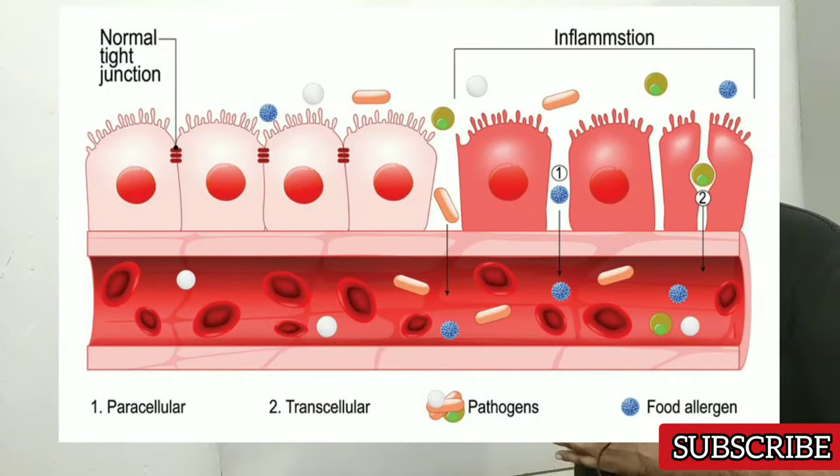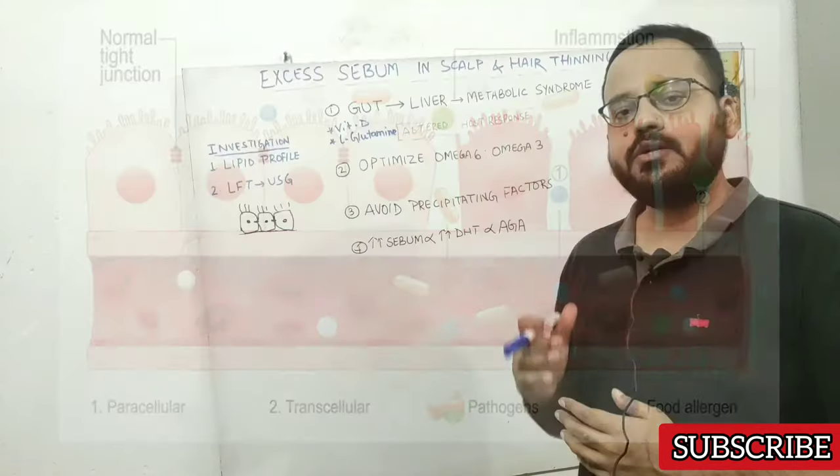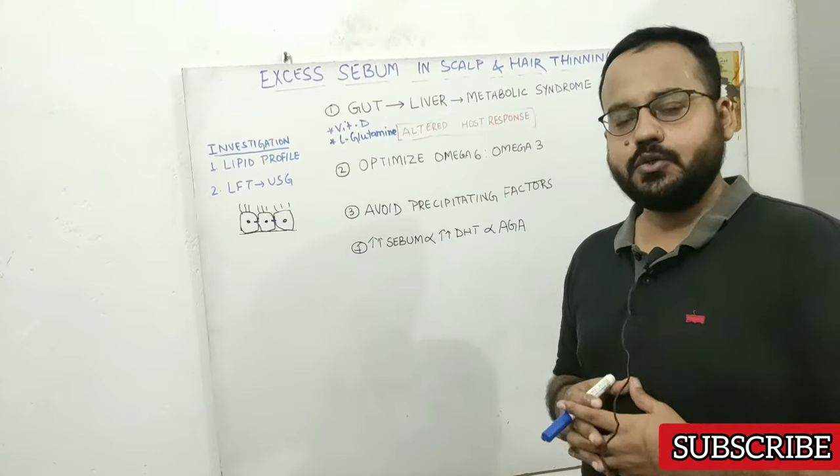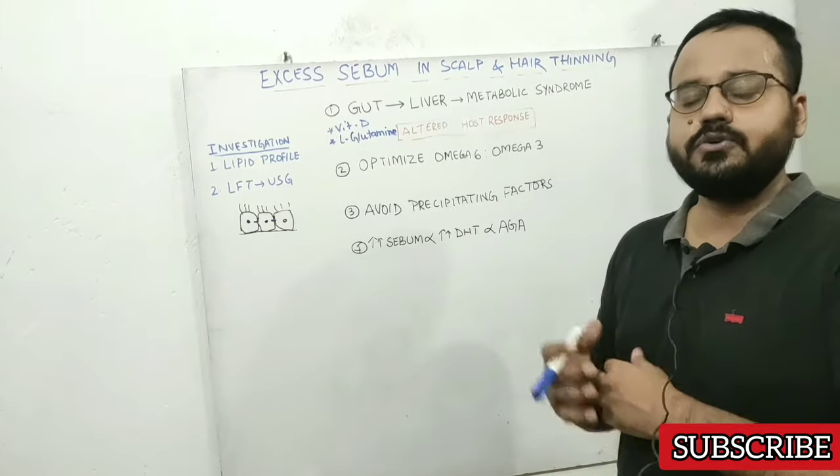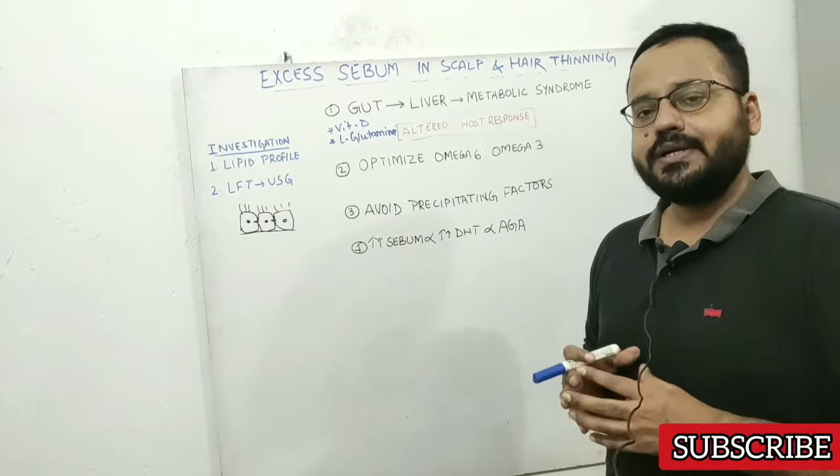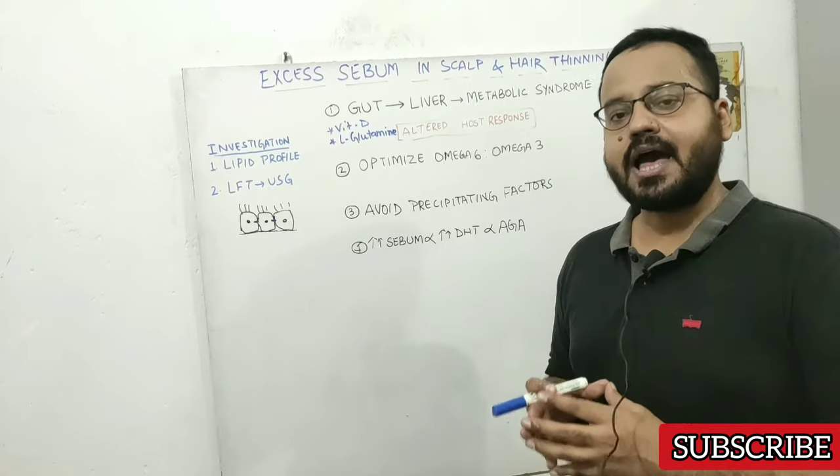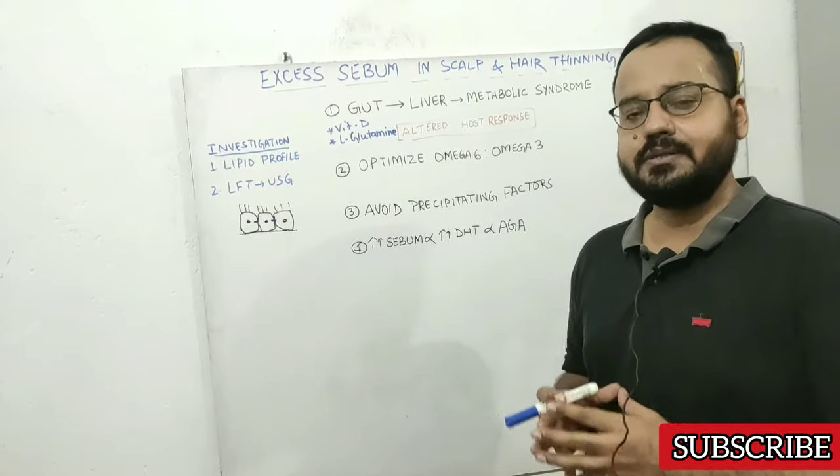In this case, there is increased seepage of toxins, pathogens, and antigens present in your colon. They enter the blood, react with your blood proteins, and lead to altered host immune response. This can cause your sebaceous glands to become hyperactive and produce too much sebum.